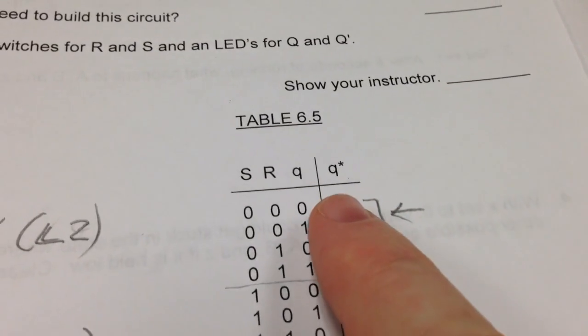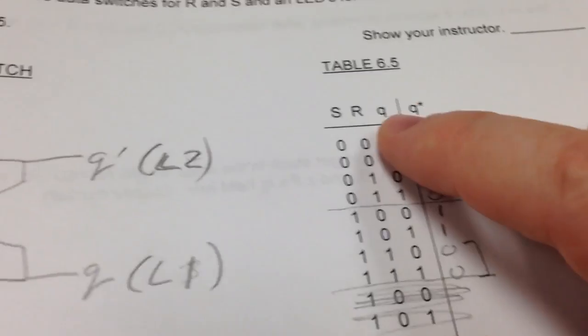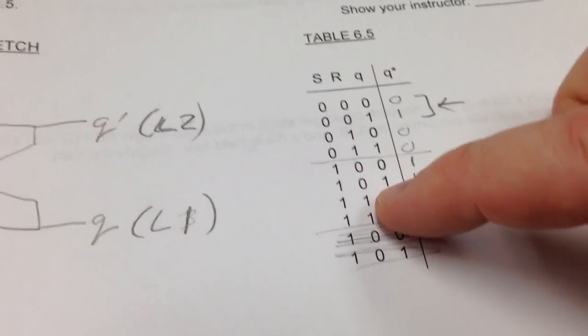When you look at the truth table for this circuit, you'll see something that looks like this. Q star corresponds to the next state, and Q corresponds to the current state. So this is the future state right here, and this is the current state.